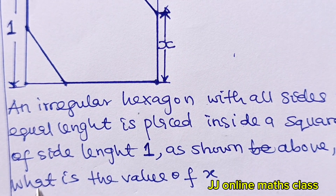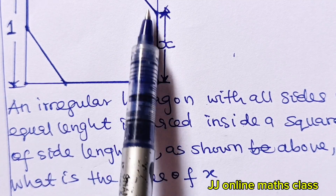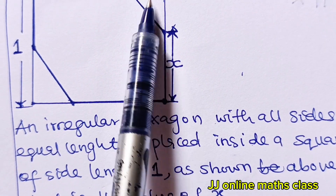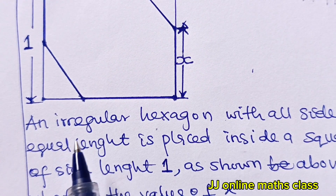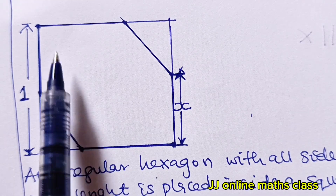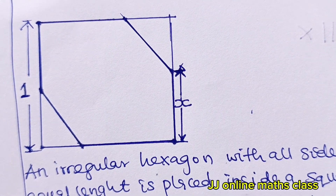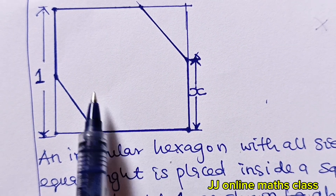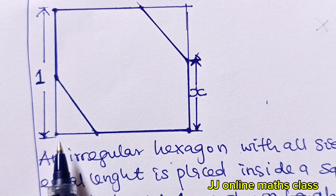The question is asking: what is the value of x? We are meant to find the value of one of the sides. Remember that all sides are equal. This looks a bit unusual, and as I said, this is not drawn to scale, but this is supposed to be a square.